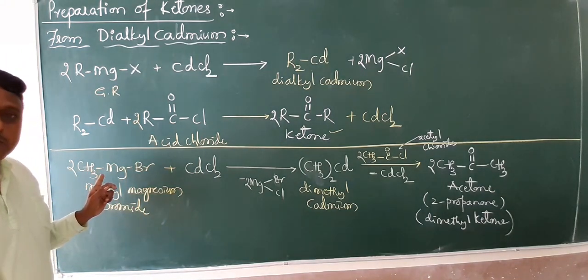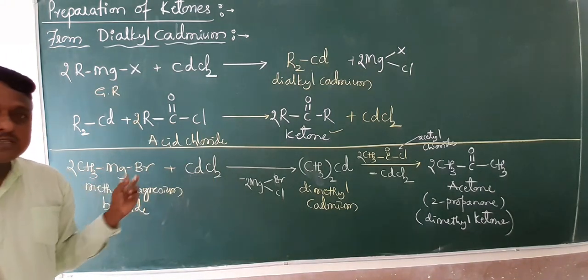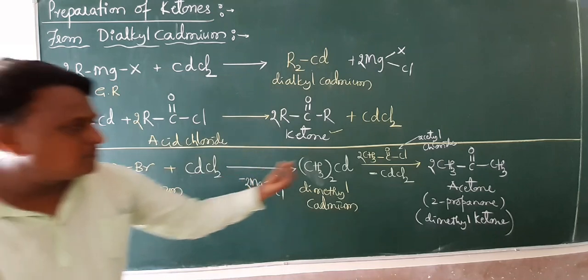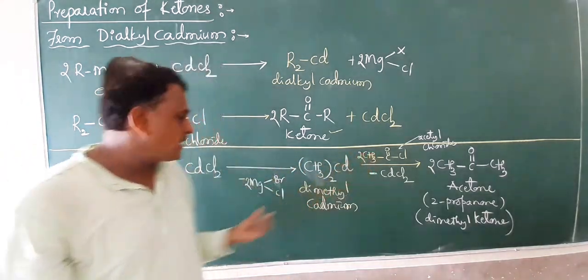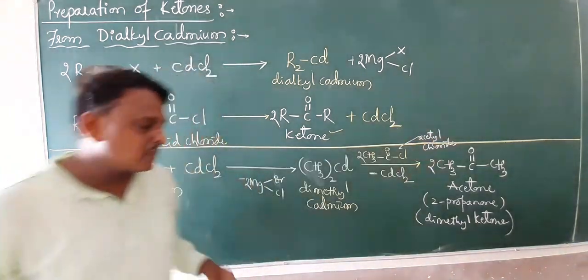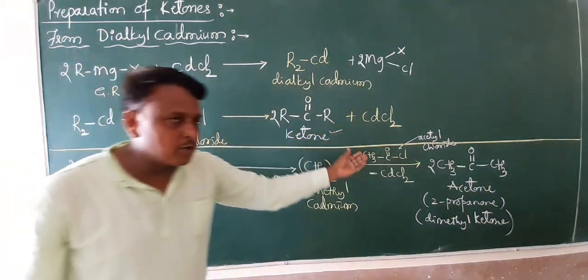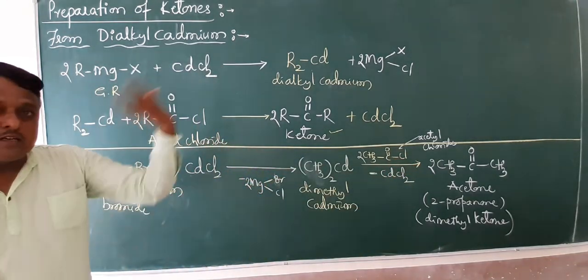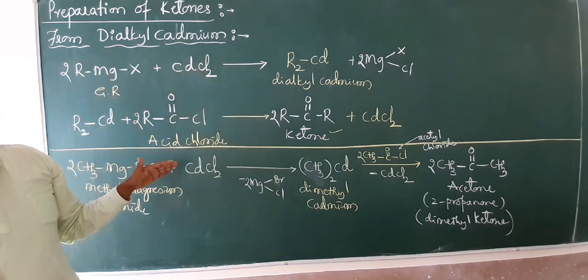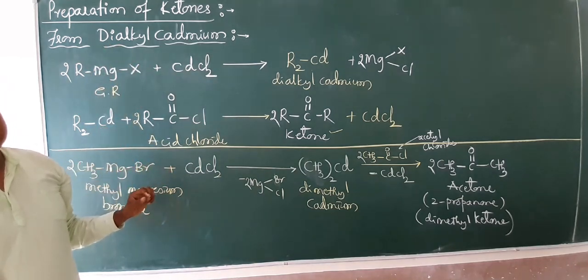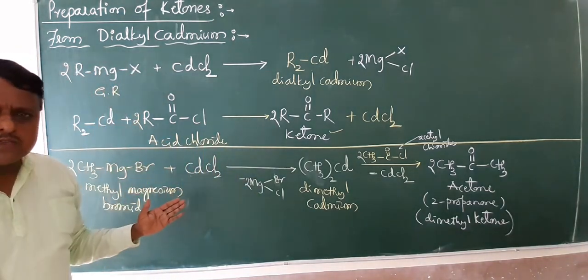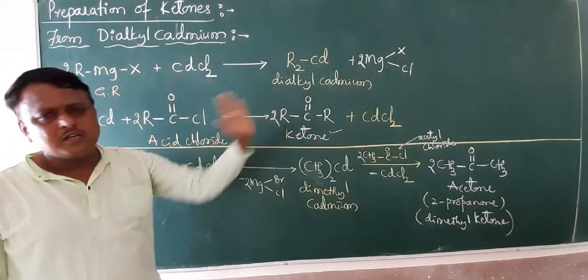Because friends, in this reaction we can prepare symmetric or asymmetric ketones. This is methyl magnesium bromide, asymmetric. It is aliphatic mixed with aromatic. We can form aromatic ketones also. This is a wonderful industrial reaction, dialkyl cadmium, which can prepare ketones either symmetric or asymmetric. Keep practicing with different examples to prepare different ketones.